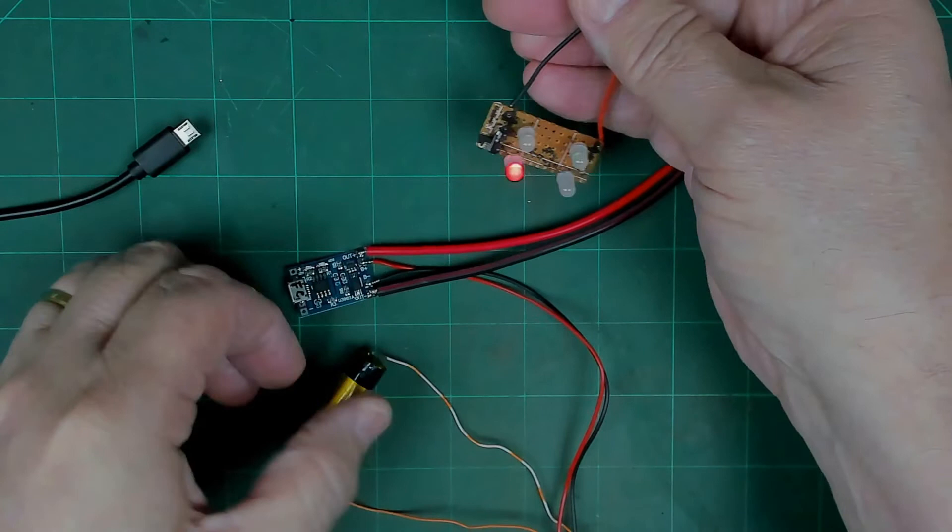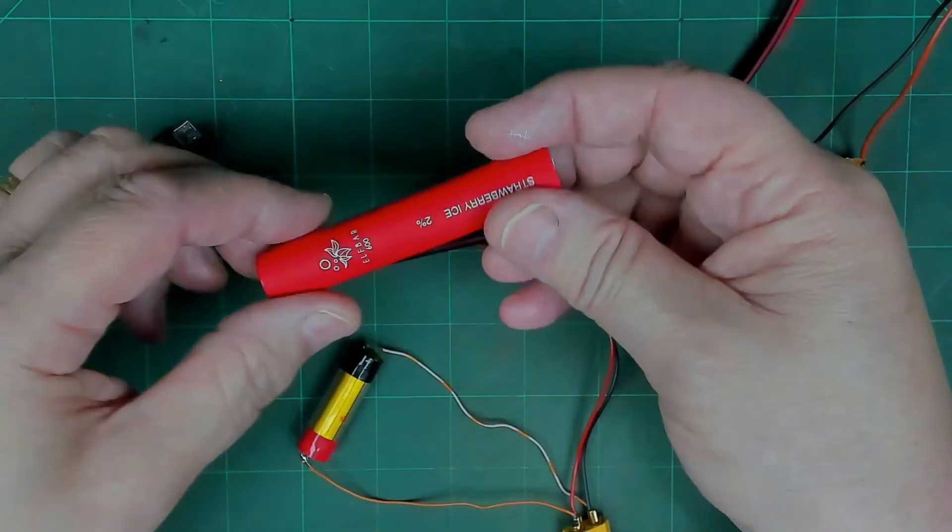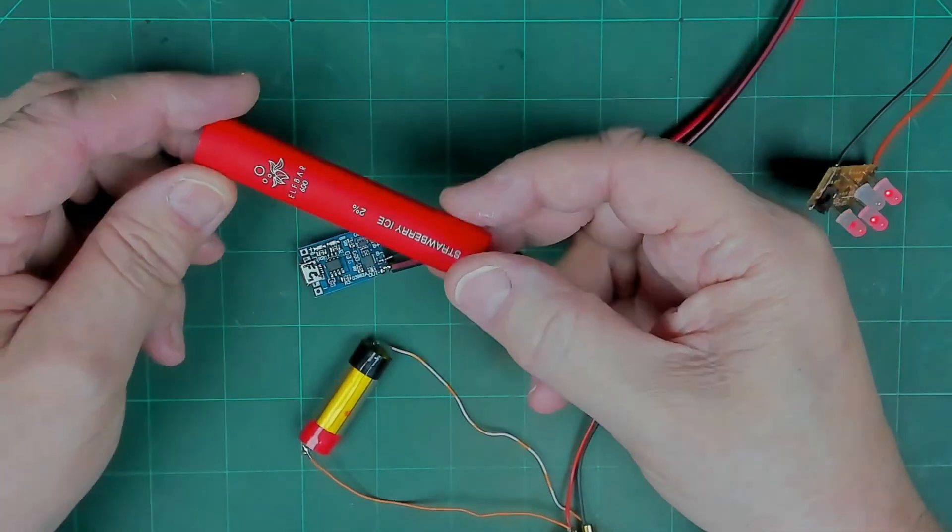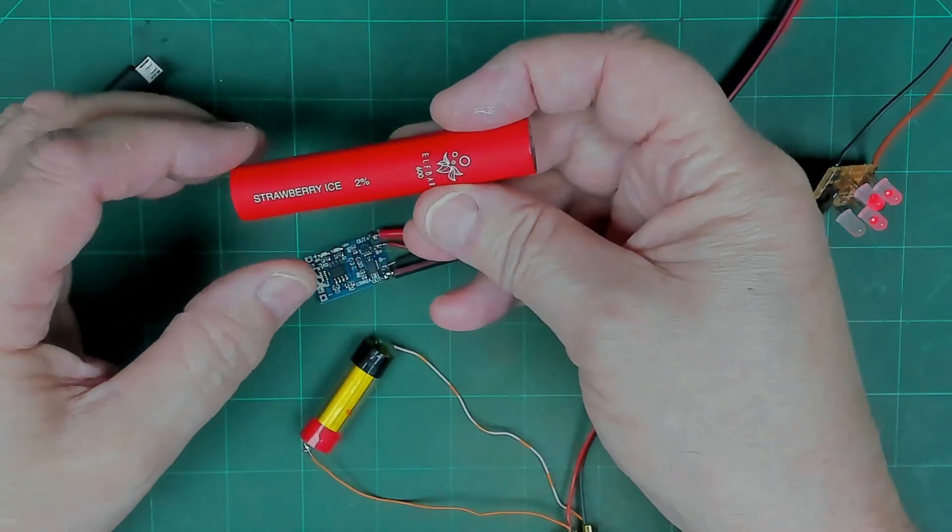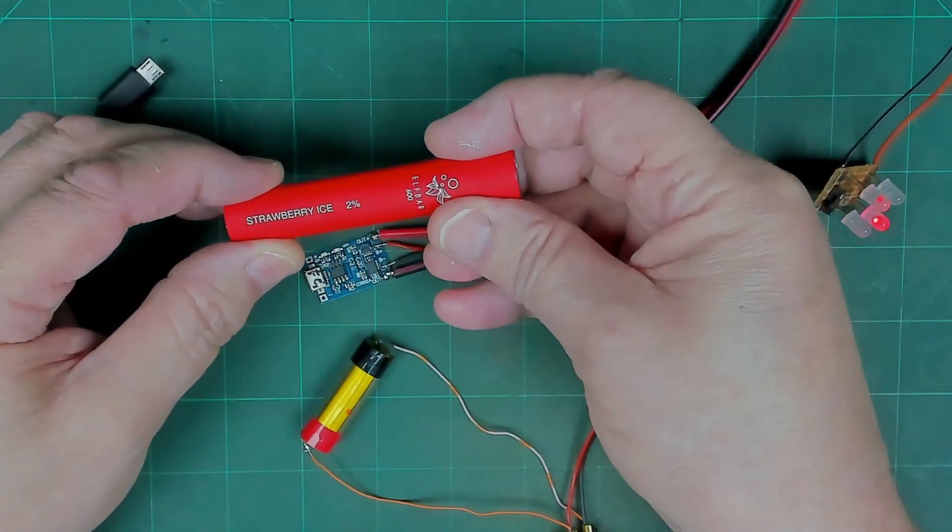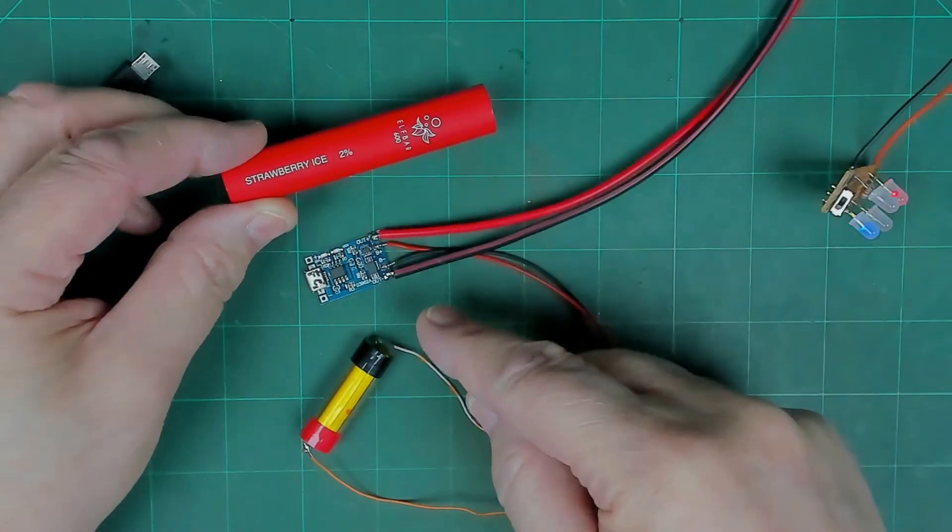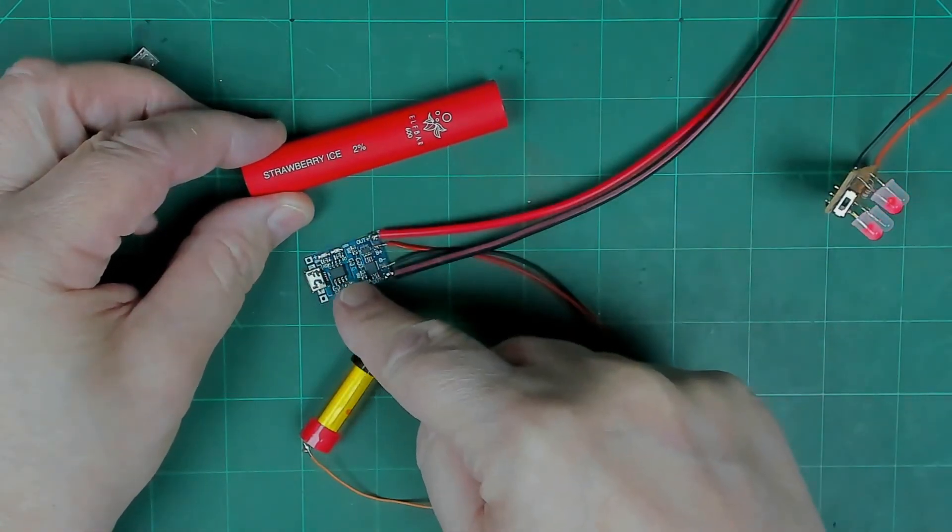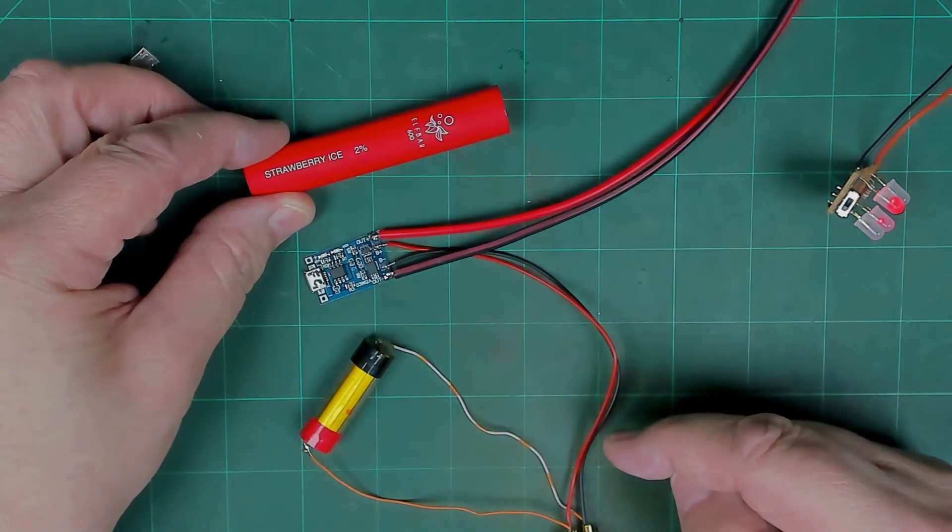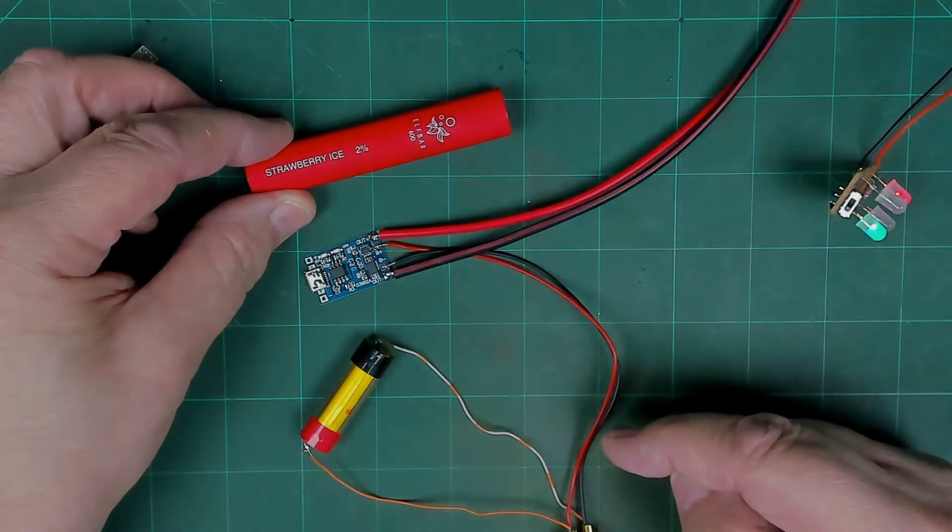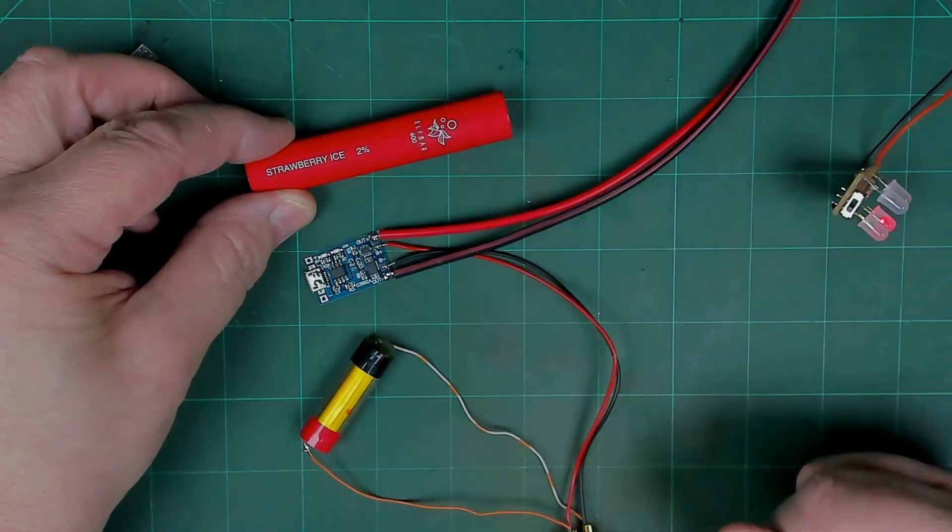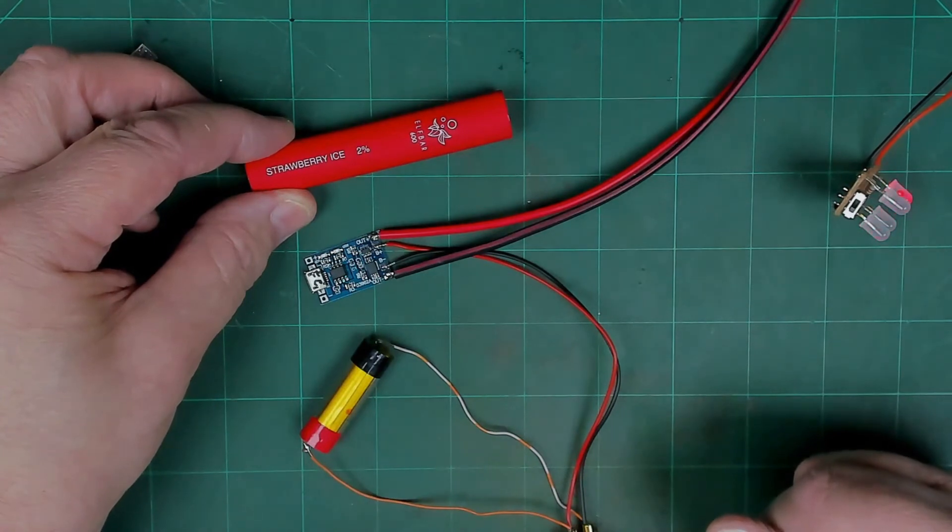So if you see one of these vaping tubes sitting in the street, in the bin, or you know somebody who uses them and they're going to chuck it away, get hold of it, take it apart, take the battery out and reuse it. And I'll put a link to this little circuit board which you can use in the description below. Thanks very much, bye.